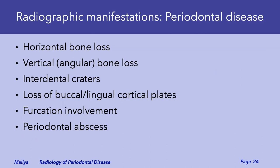Once periodontal disease is established, radiographs will demonstrate either horizontal or vertical bone loss, interdental craters, loss of the buccal and lingual cortical plates, involvement of the furcation, and sometimes periodontal abscesses.